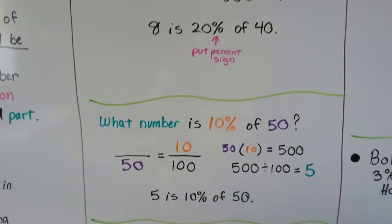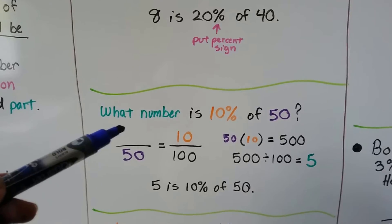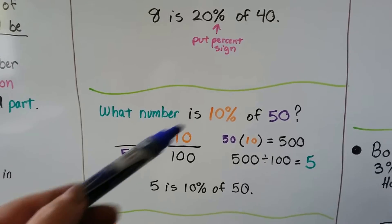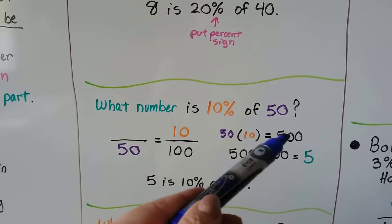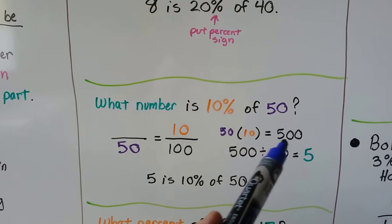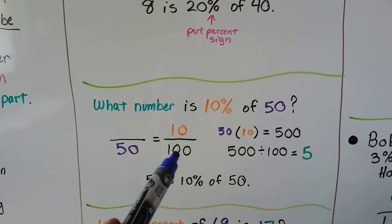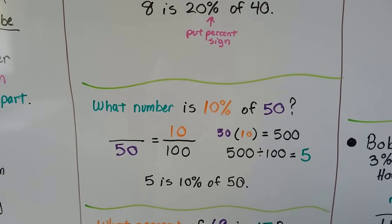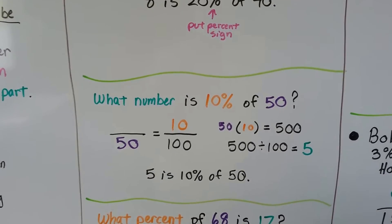This one says what number is 10% of 50. Now the green one's missing. Now the part's missing. So we've got these two that we can cross multiply. They're across from each other, and we do 50 times 10, which is 500. And we take that 500 and divide it by the last number that's there, the 100, and we get a 5. So 5 is 10% of 50.